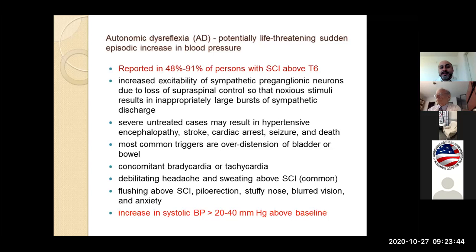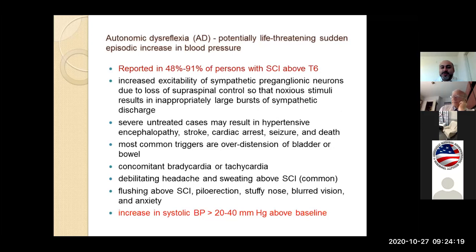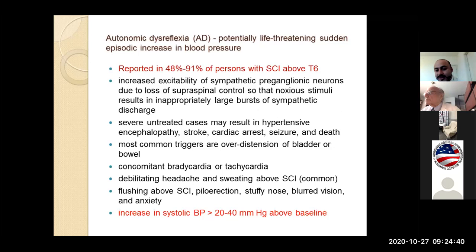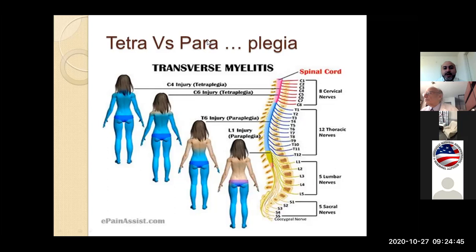Autonomic dysreflexia is a potentially life-threatening sudden episodic increase in blood pressure, highly related to spinal cord injuries. It is reported in 48 to 91% of people with a spinal cord injury above T6. The pathology involves increasing excitability of sympathetic preganglionic neurons due to loss of supra-spinal control, so that noxious stimuli result in inappropriately large bursts of sympathetic discharge. Severe untreated cases may result in cardiac arrest, seizure, and death. An increase in systolic blood pressure greater than 20 to 40 mmHg is a clinical pearl. Also look for flushing of the skin above the SCI, piloerection, stuffy nose, blurred vision, and anxiety.